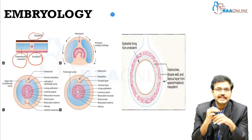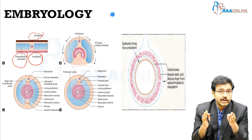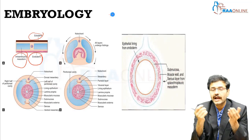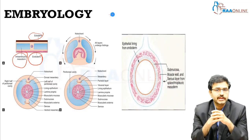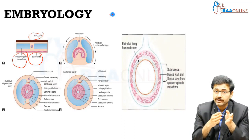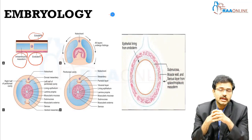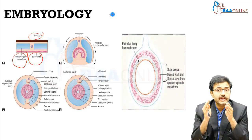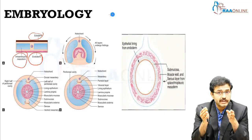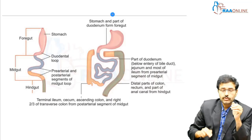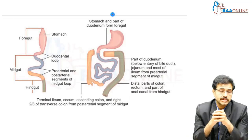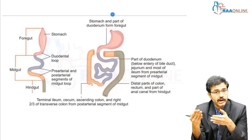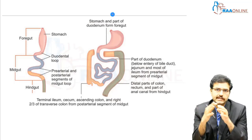In fact, the gut contains a lot of ectodermal origin cells as well. The gut has a lot of enteric nerve plexus within it — you have the myenteric and the meissner's plexus. These are of ectodermal origin; to be more specific, they arise from the neural crest cells. Once the primitive gut is formed, it differentiates itself into a foregut, midgut, and a hindgut.